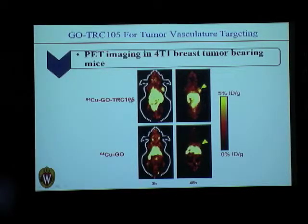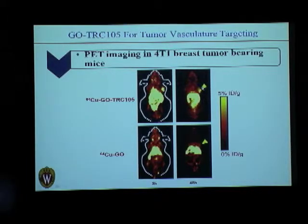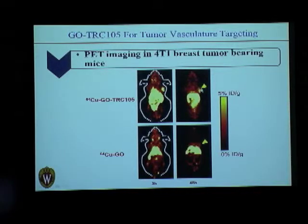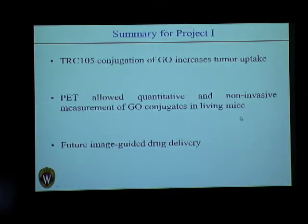This shows that the graphene oxide and TRC-105 conjugates have comparatively high tumor uptake. At 48 hours there is a diminishing of signal, probably because copper-64 has a half-life of about 12.8 hours and begins decaying, and also because the conjugates start getting eliminated from the mouse.